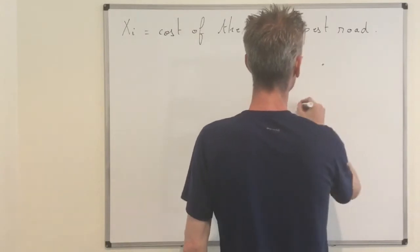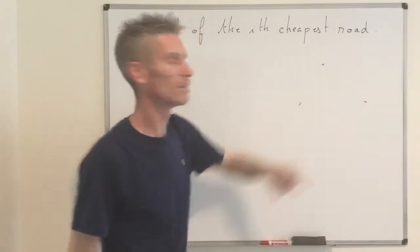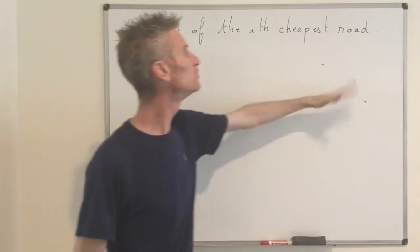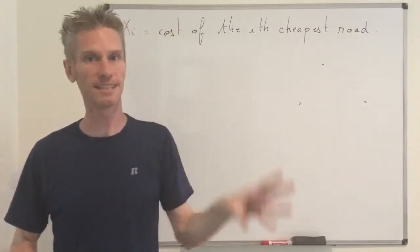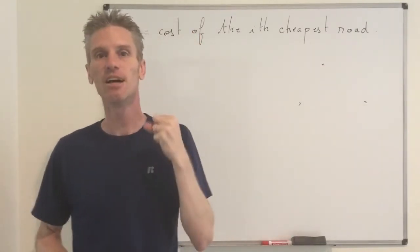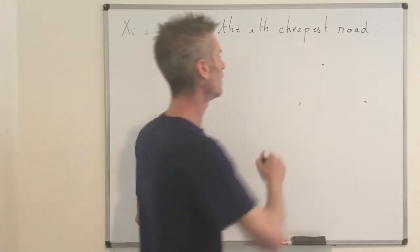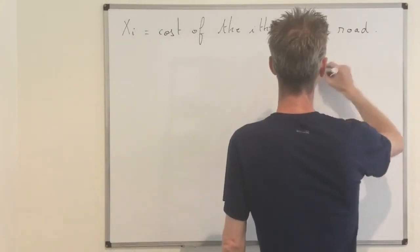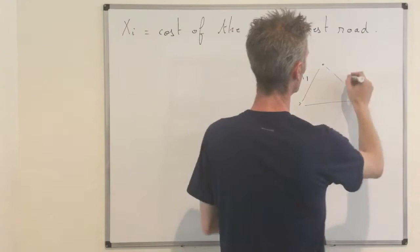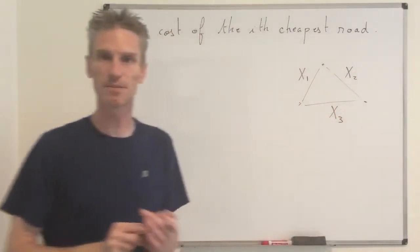Let me draw a picture. With 3 cities, if you build one road that connects 2 cities, that's not enough. But if you build 2 roads, that's enough. So you need exactly 2 roads to connect all 3 cities. The costs of the three possible roads are X1 — the cheapest, X2 — the second cheapest, and X3 — the most expensive.